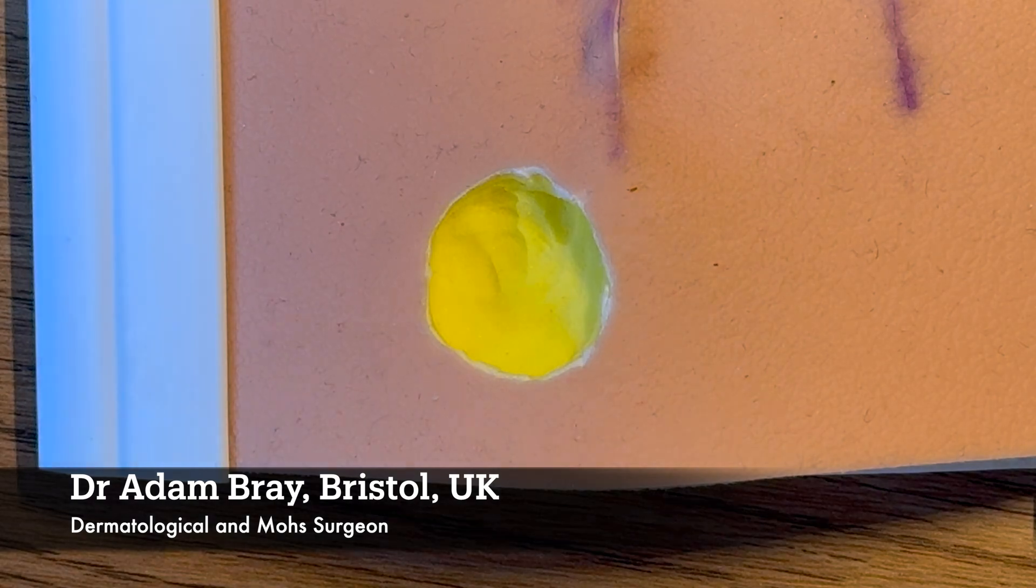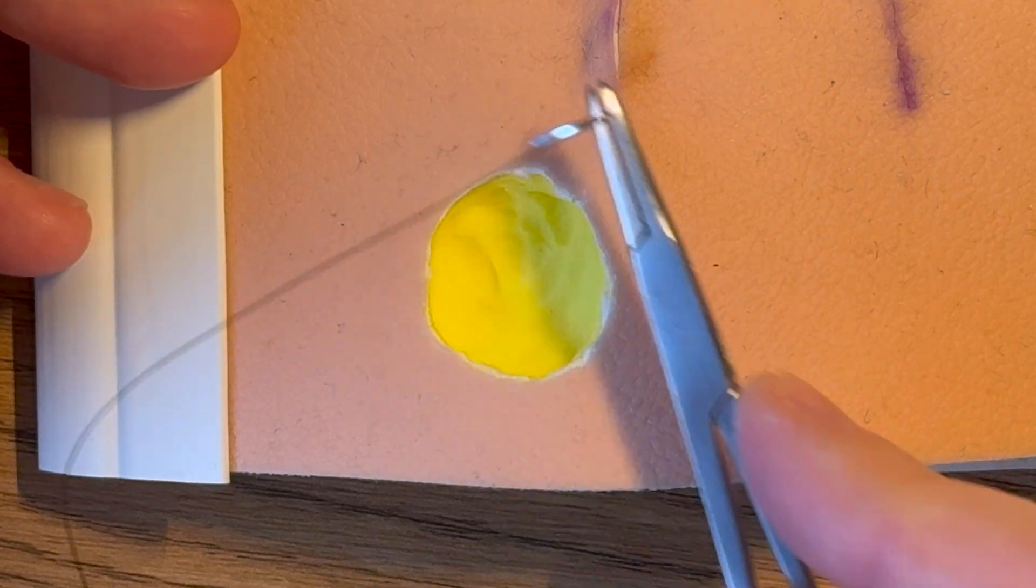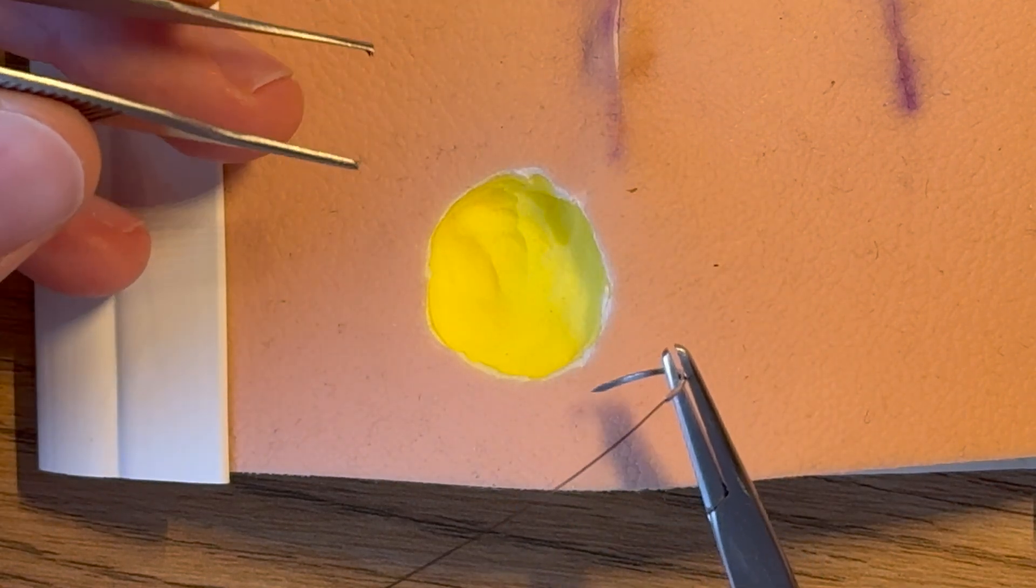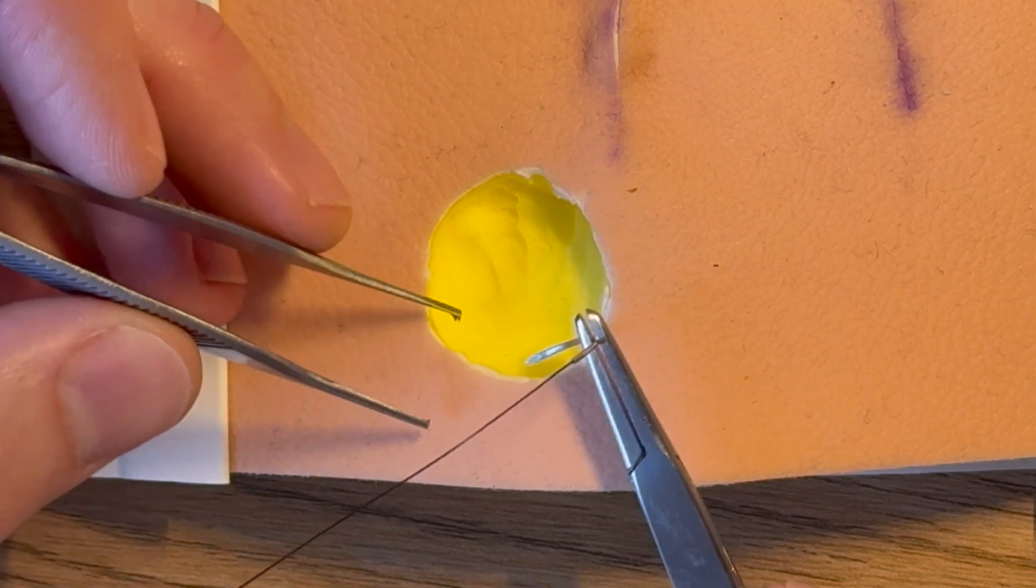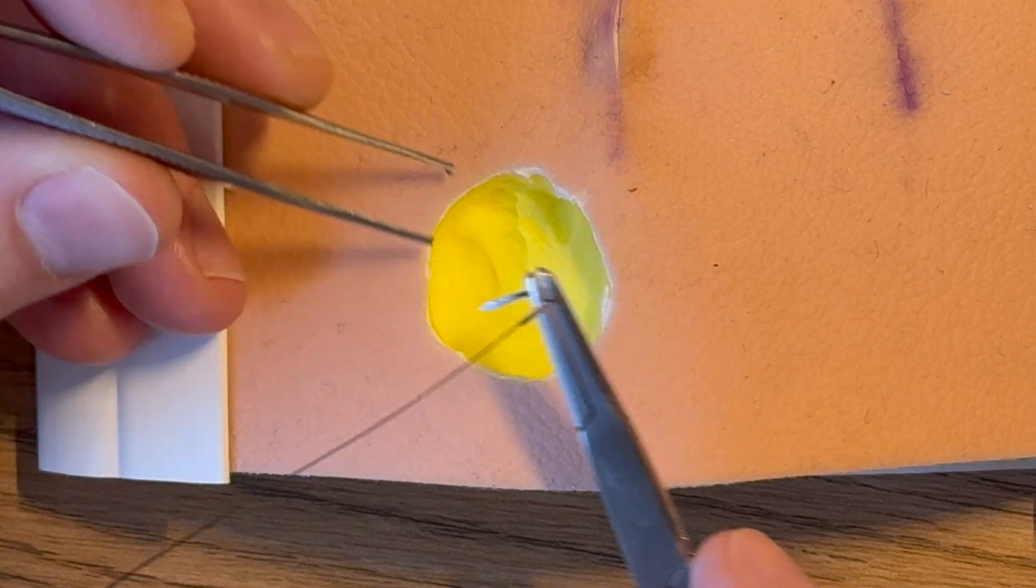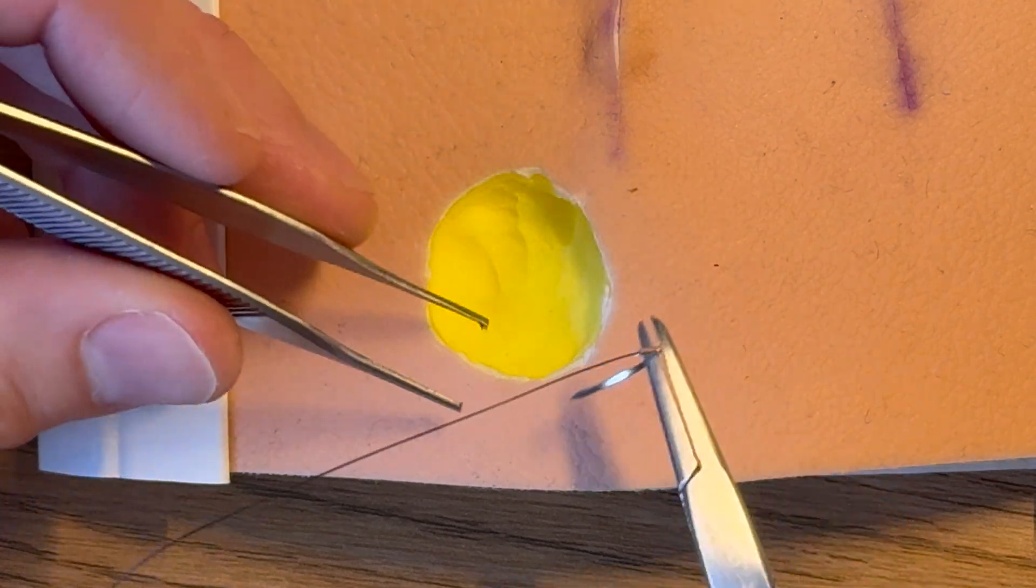If we're doing the fully buried type, we basically want to go around the perimeter of the wound in a very similar way as you would do buried dermal stitches at that sort of level or a subcuticular stitch level, but the more you bury it the better.